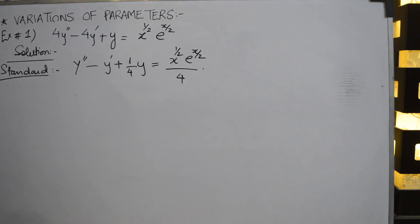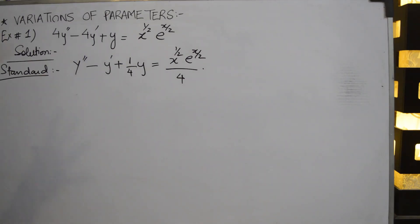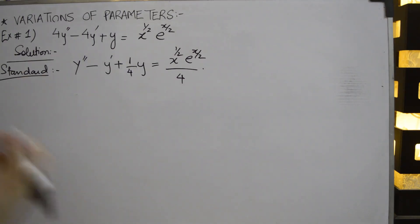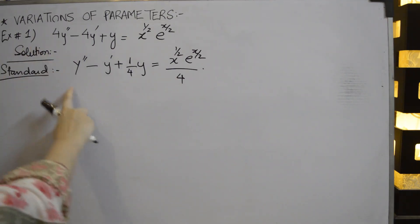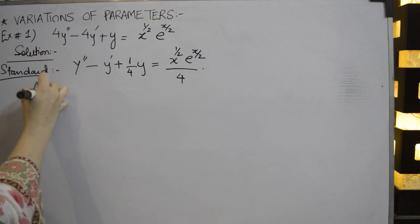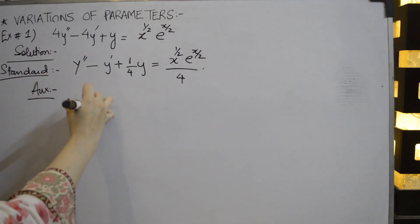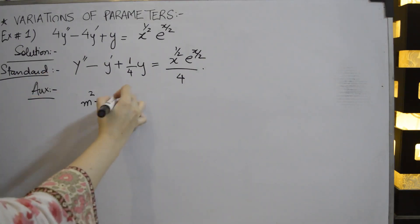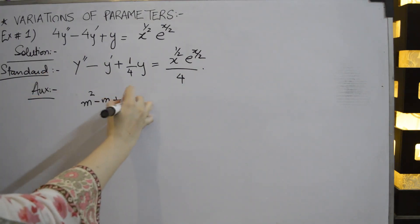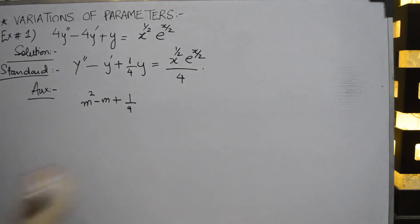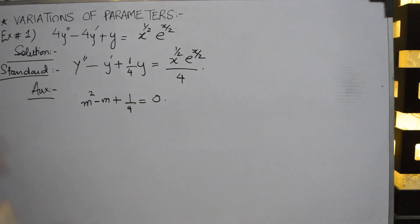Now we check its complementary solution, from which we can formulate the particular solution. For the complementary solution, the auxiliary equation is m² - m + 1/4 = 0. We apply the quadratic formula.